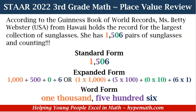Now we have all of our forms together. For standard form, we've already been writing our number in standard form. For expanded form — and again there are two ways — we have 1,000 plus 500 plus 0, because remember we do not have a number in the tens place, what we have is 0, but no value, plus 6. Or we can write 1 times 1,000 plus 5 times 100 plus 0 times 10 plus 6 times 1. In word form, it is one thousand, five hundred six.